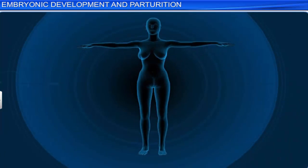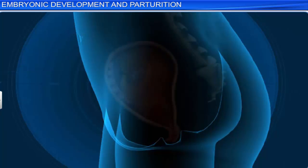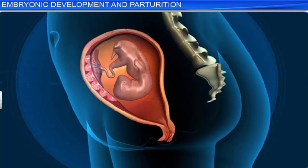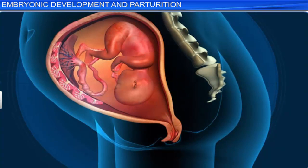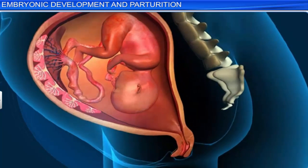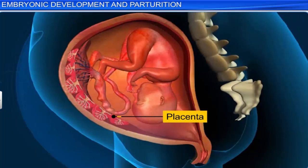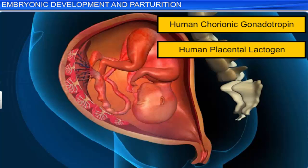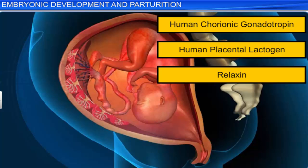Interestingly, while the fetus is undergoing several developmental changes, the mother's body too is undergoing several hormonal changes. The ovary, for example, starts secreting a hormone called relaxin. Likewise, the placenta starts secreting hormones such as human chorionic gonadotropin, or HCG, and human placental lactogen, or HPL. Incidentally, HCG, HPL, and relaxin are secreted only when a woman is pregnant.